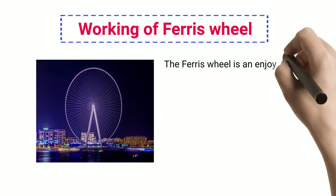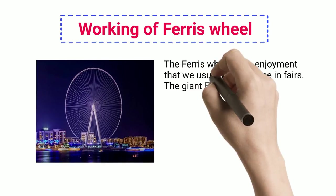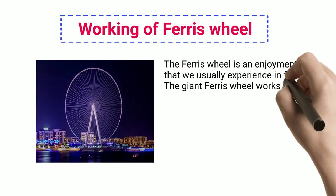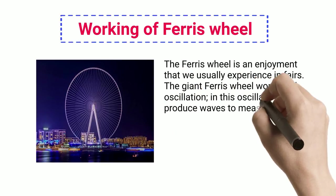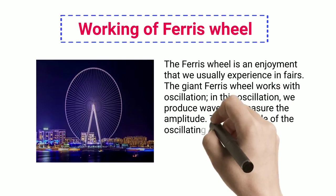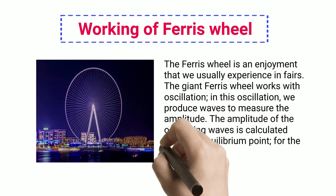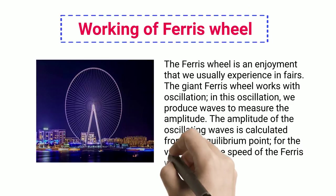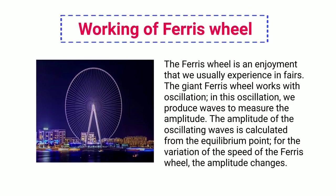Working of Ferris Wheel: The Ferris Wheel is an enjoyment that we usually experience in fairs. The giant Ferris wheel works with oscillation; in this oscillation, we produce waves to measure the amplitude. The amplitude of the oscillating waves is calculated from the equilibrium point, and for the variation of the speed of the Ferris wheel, the amplitude changes.